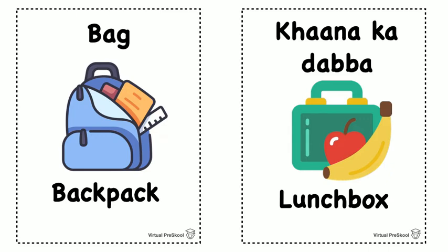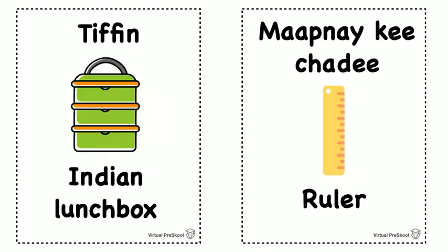Kana ka dabba. Kana ka dabba is a lunchbox. Kana means food and dabba is a box, so a box for food is kana ka dabba. Remember that kana is a tricky H word — I'm not saying 'kana,' I'm saying kana. Tiffin — you might have heard this word before. A tiffin is a very special kind of lunchbox used in India a lot, with stacked containers held together by two rods and a handle on top. A tiffin is an Indian lunchbox.